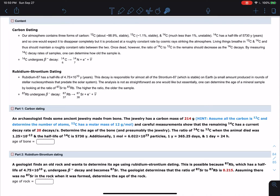Let's talk about radioactive dating. This problem deals with two types, carbon dating and rubidium-strontium dating.